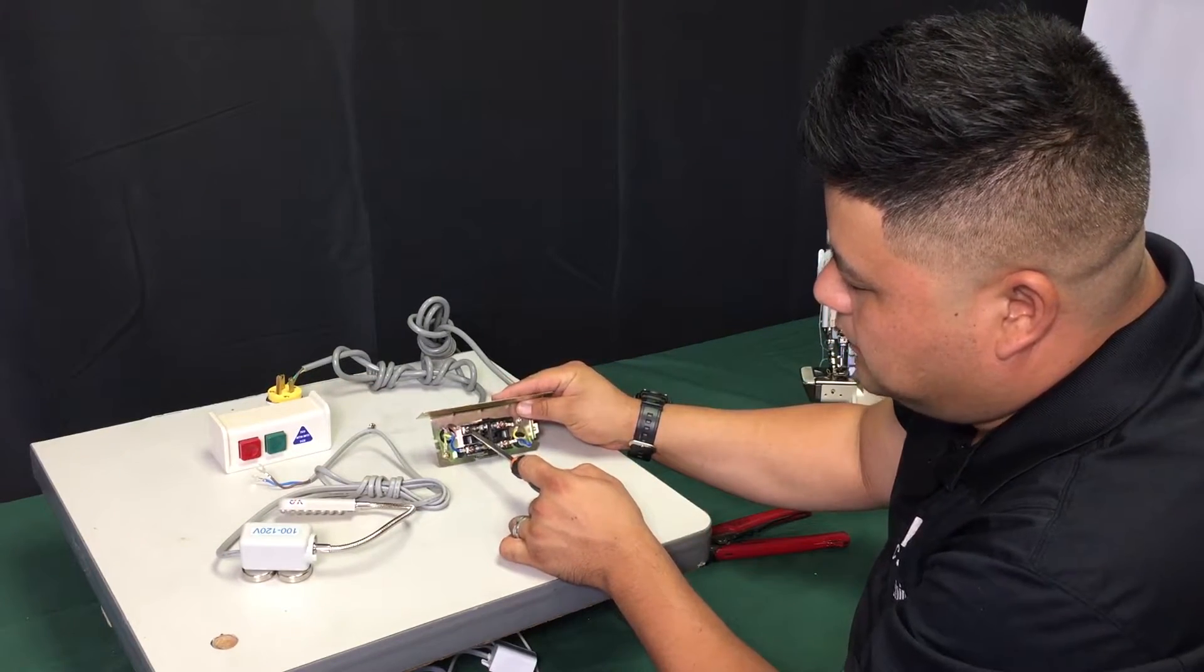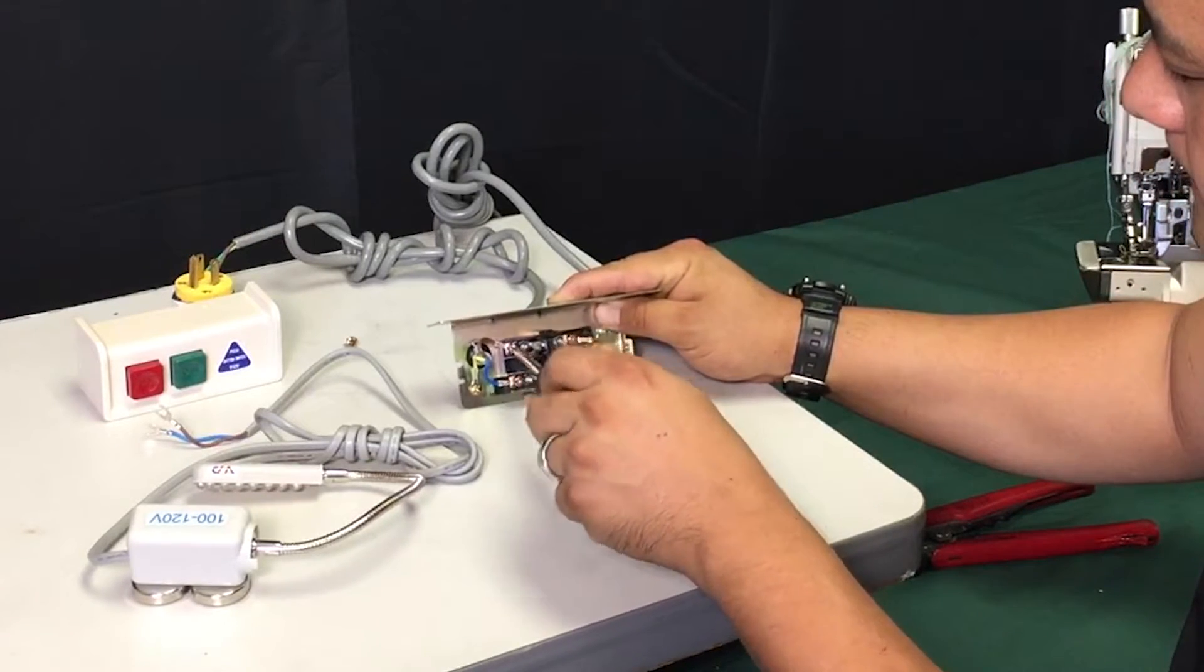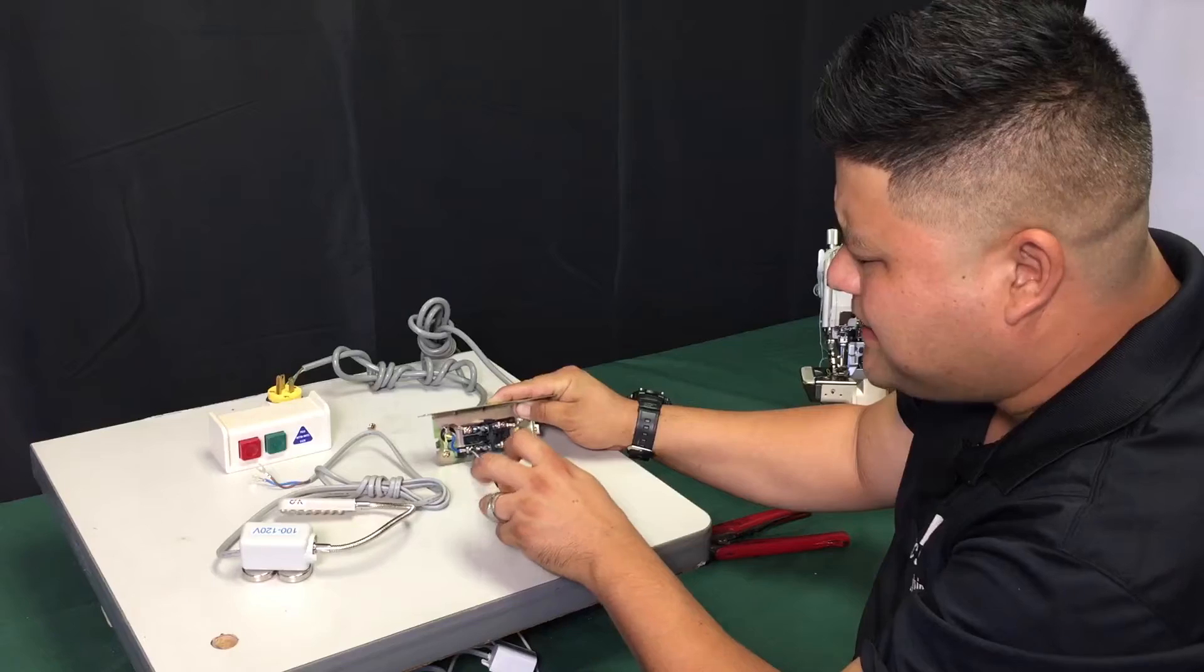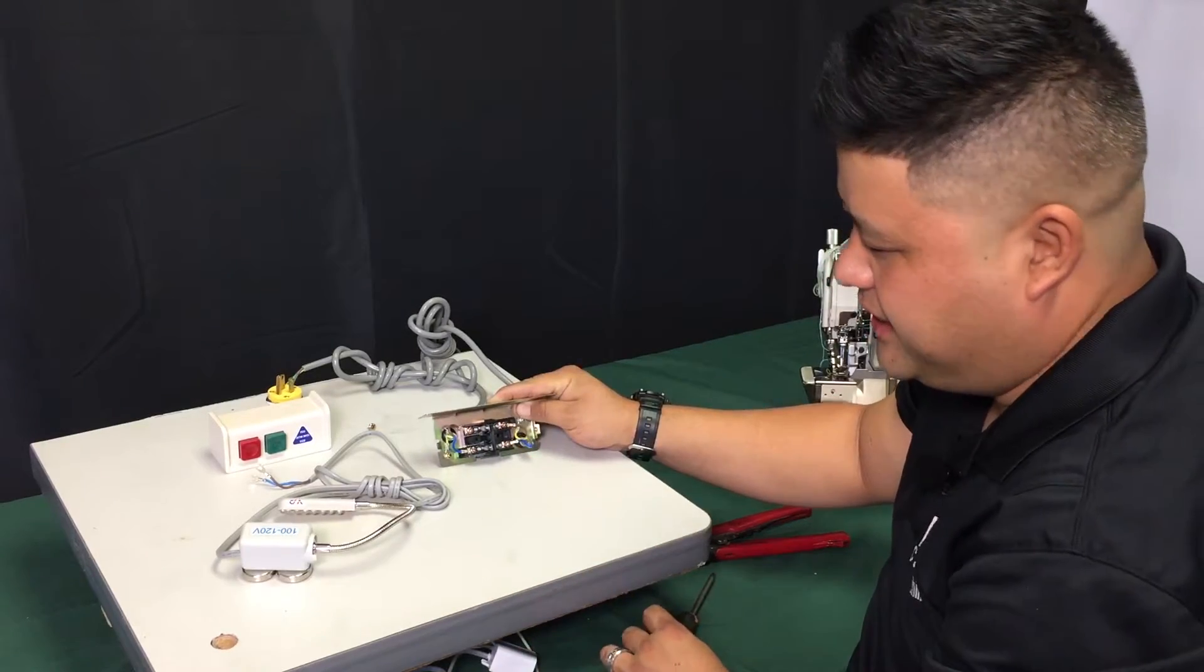Now what we're going to do is we're going to loosen up screw number one right here and the bottom one right here. Mind you, you don't want to take it out because you're working in such a small space. It just makes it harder for you to actually get it back in.